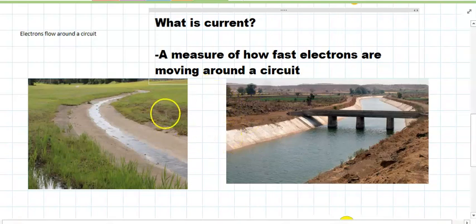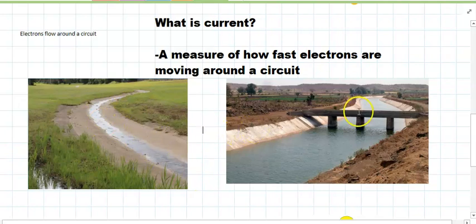And a good way to think of current is just like water in a river or a canal like here. So a low current in a circuit you can think of like this canal here. There's not much water flowing through it, and if it was an electrical circuit there's not many electrons. All the electrons are flowing slowly through the circuit.